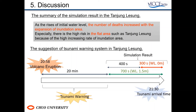Finally, we will discuss the tsunami hazard in the coastal area of Sunda Strait. From our simulation results, it is revealed that the number of deaths may increase depending on the initial water level condition at the time of disaster. There is a high risk in flat areas such as Tanjung Lesung because of the high increasing rate of inundation area. Based on the evacuation simulation results, evacuees need to start evacuation within 20 minutes after the eruption in the case of an initial water level of 1.5 meters. We should also evaluate evacuation action in other areas because of differences in topographic characteristics and tsunami arrival time.